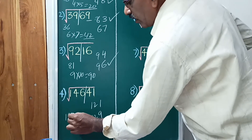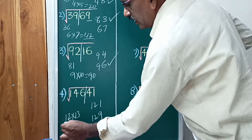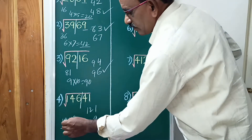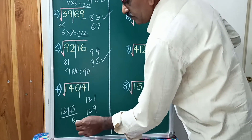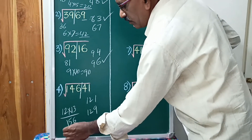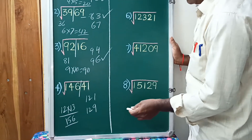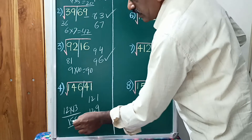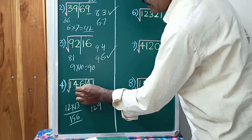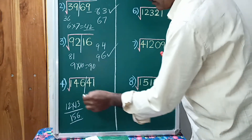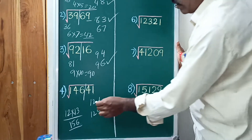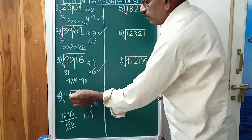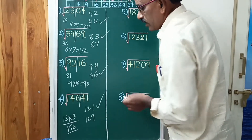12 into 13 equals 156. Multiply: 6, 5, 1. Compare 146 to 150 — 146 is less than 150. Therefore, the square root of 14641 equals 121.